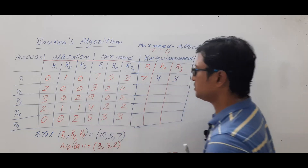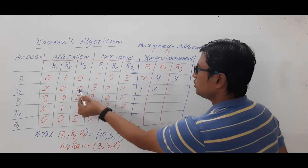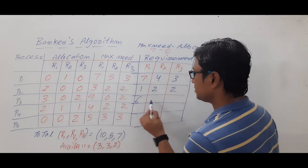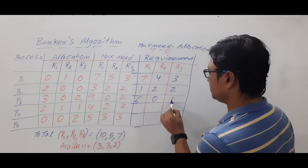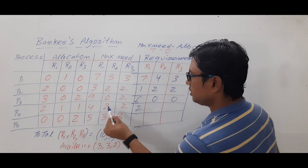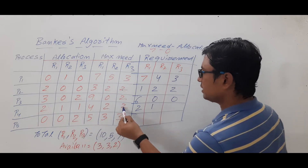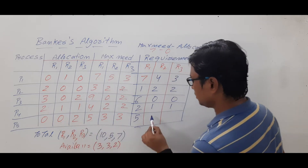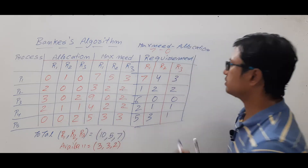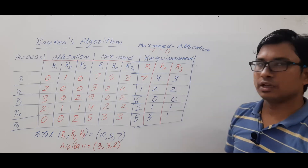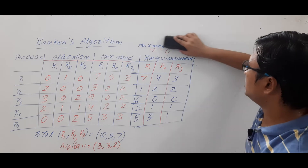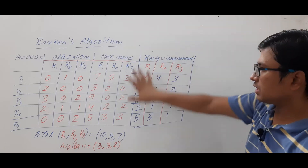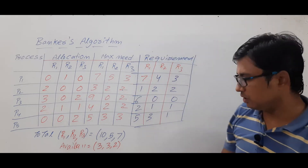Continuing the requirement calculations: P2 requires 3 minus 2 = 1 for R1, 2 minus 0 = 2 for R2, 2 minus 0 = 2 for R3. P3 requires 9 minus 3 = 6 for R1, 0 minus 0 = 0 for R2, 2 minus 2 = 0 for R3. P4 requires 4 minus 2 = 2, 2 minus 1 = 1, 2 minus 1 = 1. P5 requires 5 minus 0 = 5, 3 minus 0 = 3, 3 minus 2 = 1.